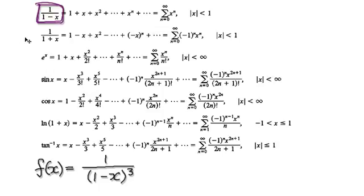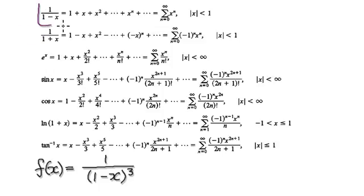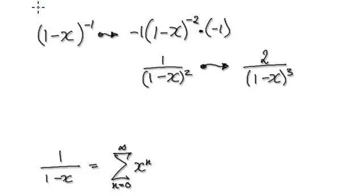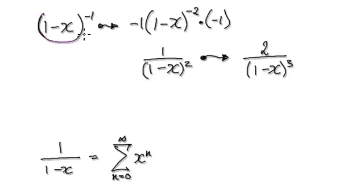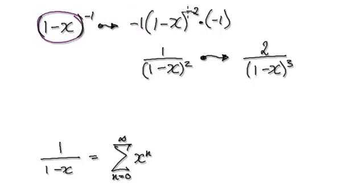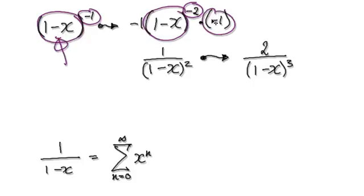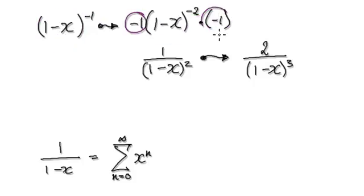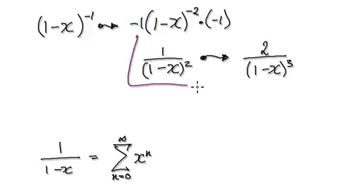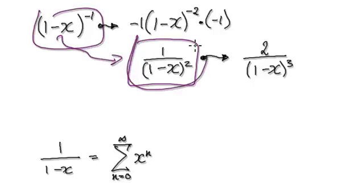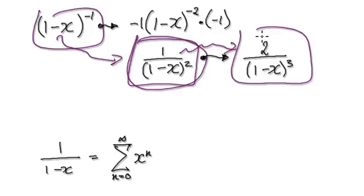Rewrite this as (1 minus x) to the power of minus 1. When you differentiate it, the minus 1 comes down, the bracket stays intact, the power decreases by 1, and then you multiply by the derivative of the inner function. So minus 1 times minus 1 gives you this. Differentiate it once — you get this. Differentiate it again — you get this.